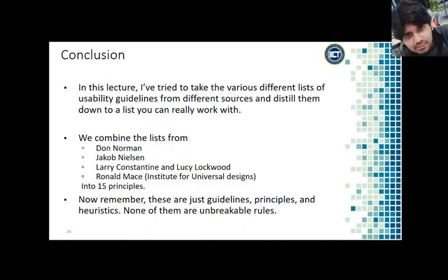Let's conclude this lecture. We have tried to take various different lists of usability guidelines from different sources and distill them into a list you can really work with, combining Don Norman, Jacob Nielsen, Constantine and Lockwood, and Ronald Mace into 15 principles. Remember, these are just guidelines, principles, and heuristics — none of them are holy grails or unbreakable rules. You have to consider all of these principles while also considering whether any one of them can harm your interface such that users won't use it.